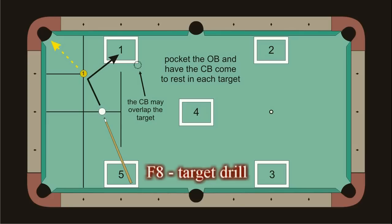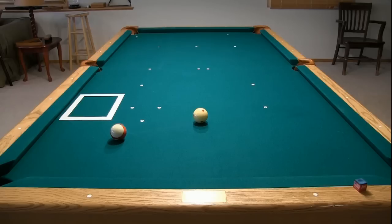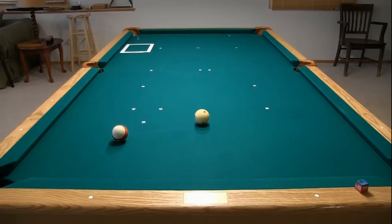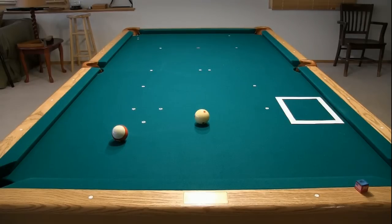The final drill in Exam 1 deals with cue ball position control. The goal is to pocket the object ball in the corner and send the cue ball to each of the five targets. You get four tries at each for a maximum possible score of 20. Here are the target positions at the table: 1, 2, 3, 4, and 5.